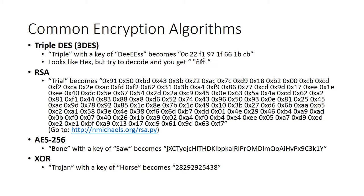Now, common encryption algorithms: Triple DES, or 3DES as it's more commonly abbreviated. If you take the word 'triple' with a key of 'DES', it becomes 0C22F197 and so on. It looks like hex, but if you actually take this string and put it in a hex decoder online, you would get a big mess of nothing — and that's not going to help you. You would need the key and the ciphertext in order to derive what the original plain text was.